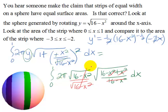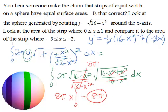So that means we'd have 8π times x evaluated from 0 to 1, and so that's just going to be 8π. Now how would this be different if we had negative 3 to negative 2?